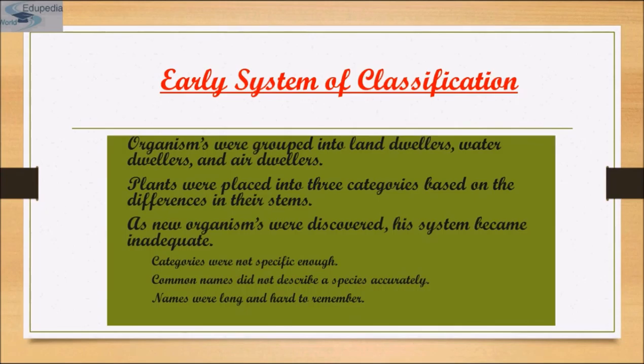This is the reason why Aristotle's system of classification failed. First, categories were not specific enough. Second, common names did not describe a species accurately. And third, names were long and hard to remember.